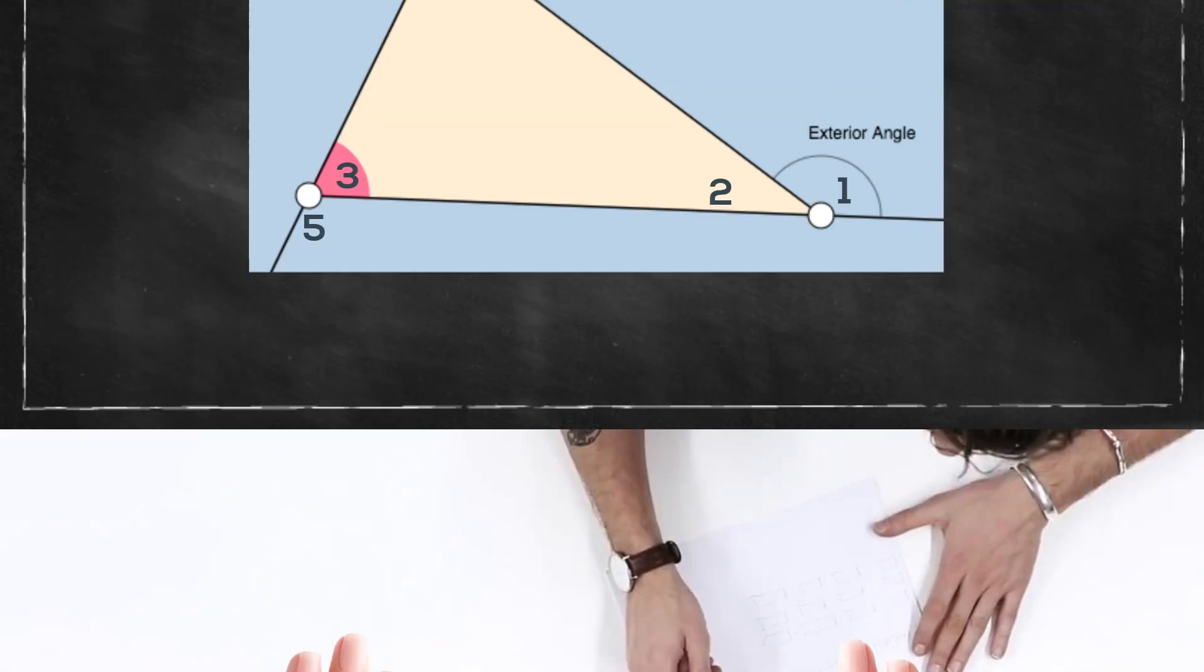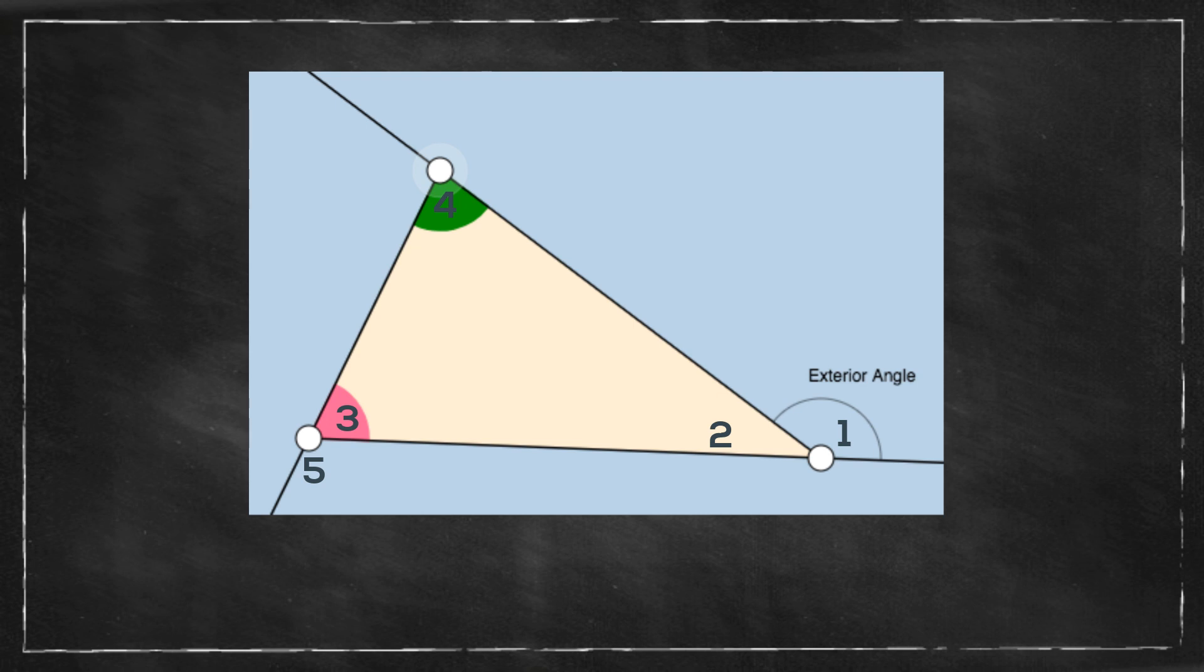Say you're presented this triangle and you are given the measure of the exterior angle 1 and the interior angle 3. How do you find the other missing angles 2, 4, and 5?